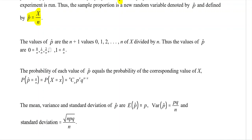So the values of p-hat go from zero all the way through to one, since n over n equals one. Each value is zero over n, one over n, two over n, and so on up to n over n. The probability of each value of p-hat equals the probability of the corresponding value of x, using the binomial formula: nCx times p to the power x times q to the power n minus x.